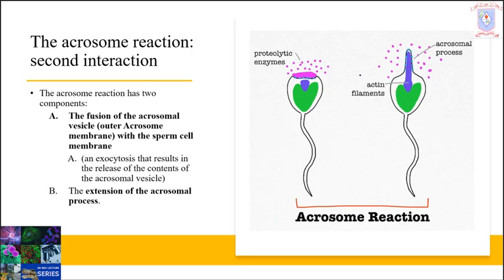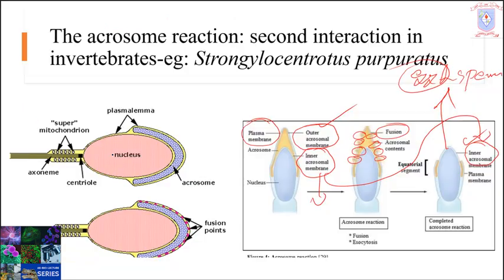In the last class we discussed the various steps that take place during the process of fertilization. The acrosomal reaction is the second interaction between sperm and egg. The acrosomal reaction has two components: the first component is the fusion of the acrosomal vesicle with the sperm cell membrane as discussed, and the second is the extension of the acrosomal process.